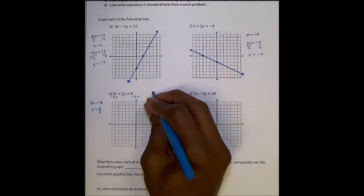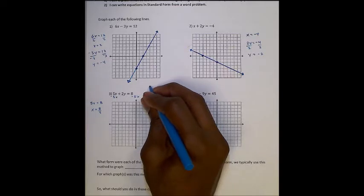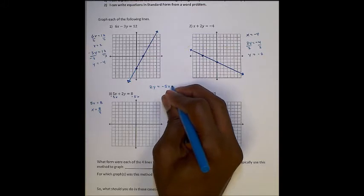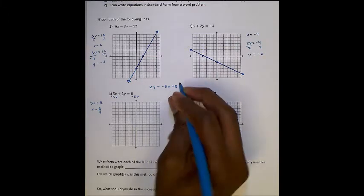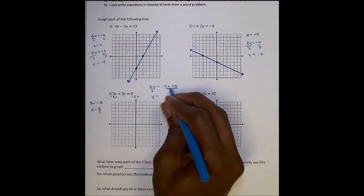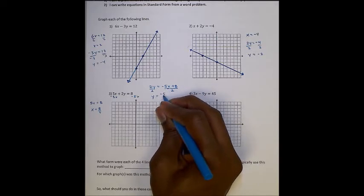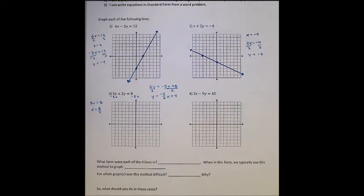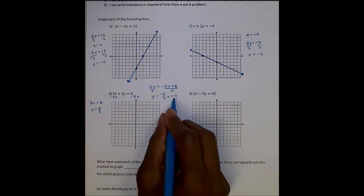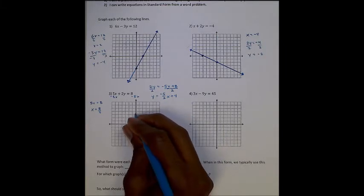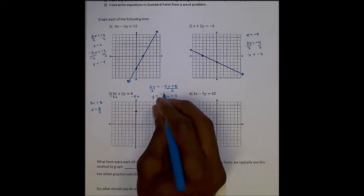What I have to do now is try to graph it another way. Since standard form didn't work, I'm going to put it in slope-intercept form. That means I have to solve for y. So I have 2y equals negative 5x plus 8, and then I'll divide by 2. I have y equals negative 5 over 2x plus 4.